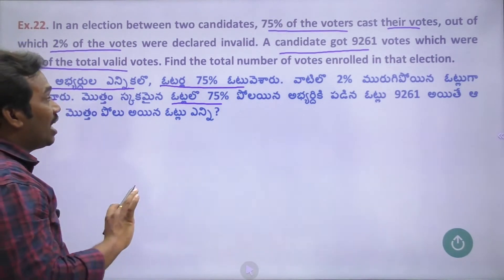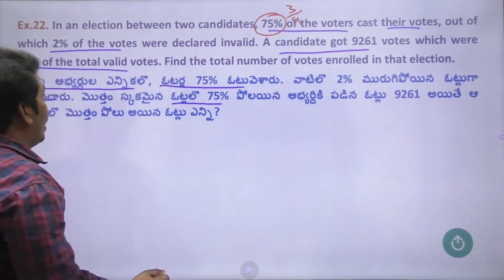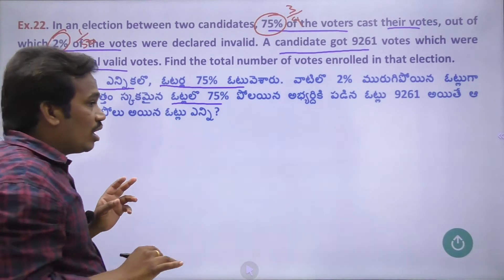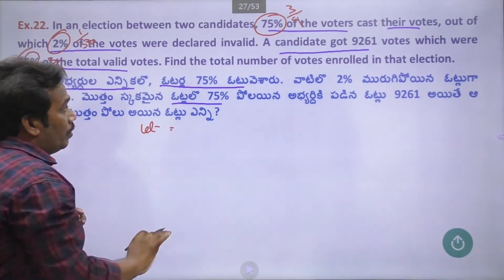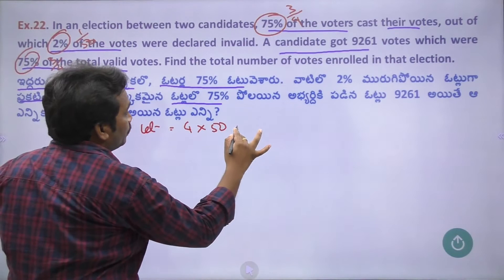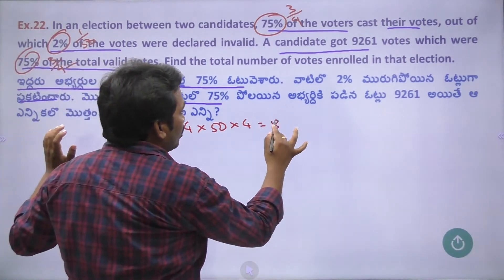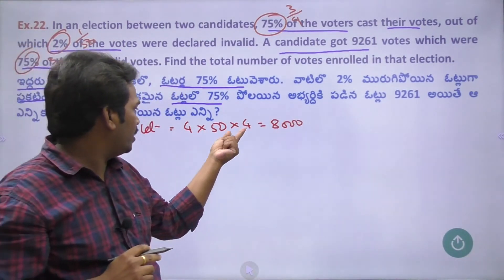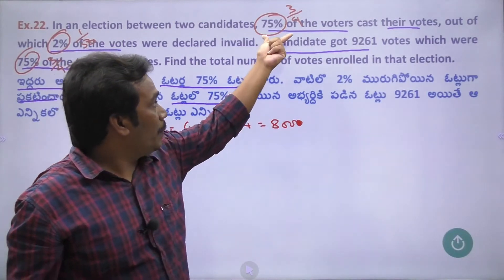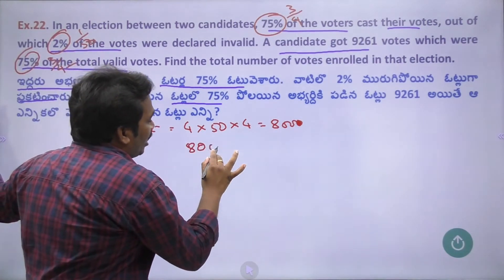We can't find these numbers from 100%. We have 75% of them, and 75% is equal to 3 by 4. The invalid votes are 2% equal to 1 by 50, and 75% equal to 3 by 4. Let the total number of voters be x. In the denominator we have 4 and 50. So the remaining number - valid votes received by the winning candidate - relates to 9260.